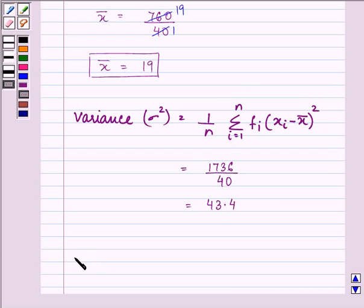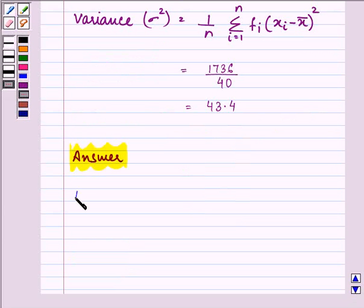So in the end we can conclude the session by writing down the answers that we have obtained. So it is mean equals 19 whereas variance equals 43.4. So this completes the session. Hope you understood the whole concept well and have a nice day ahead.